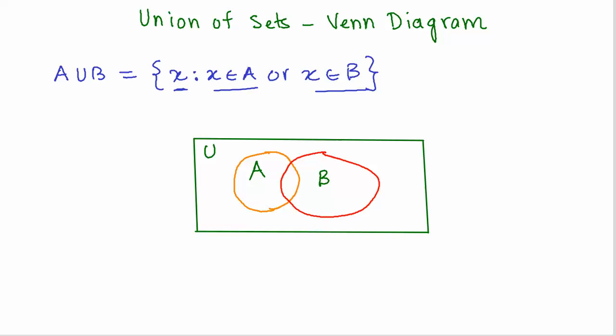If I were to represent A union B in this case, we would shade this portion. So we include A, we also include all the elements that are common between A and B.